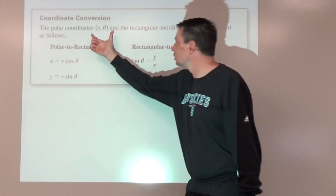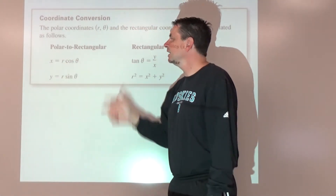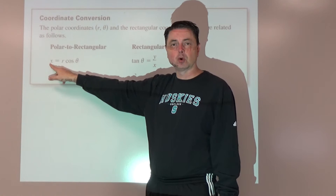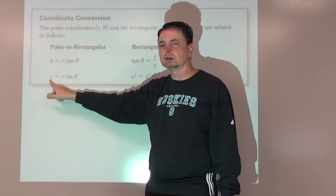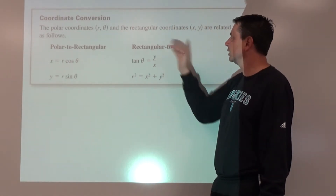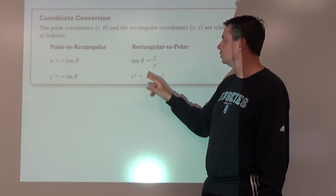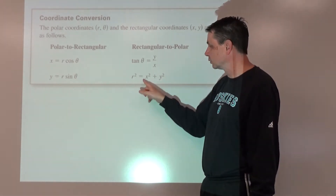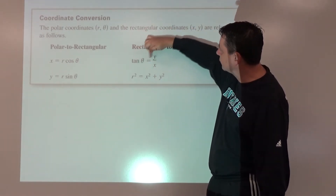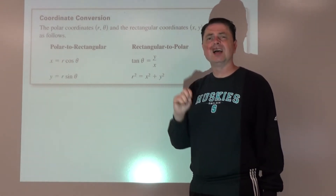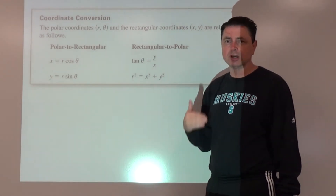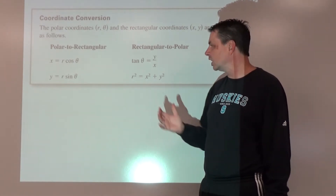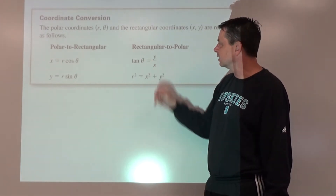To convert from polar to rectangular: given r and theta, the x coordinate is r times cosine theta and the y coordinate is r times sine theta. Going the other direction: r squared equals x squared plus y squared (Pythagorean theorem), so r is the square root of that. Then tangent of theta equals y over x to find theta. Be careful — especially using inverse tangent on a calculator — you need to think about which quadrant you should be in to get the correct theta.